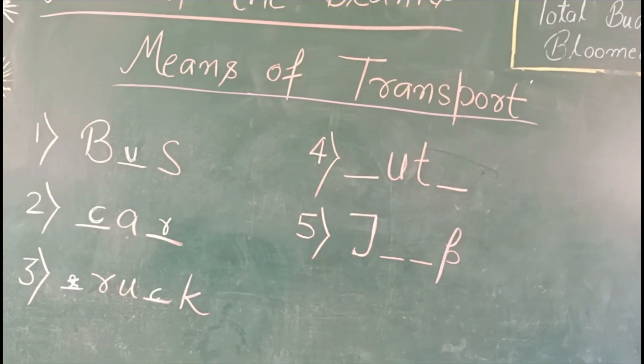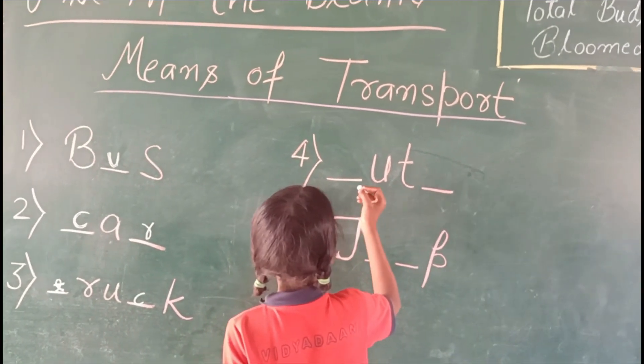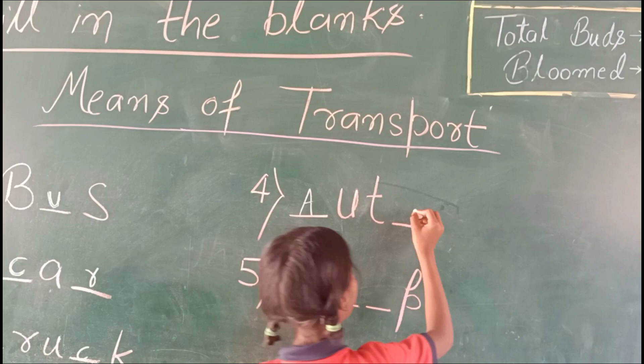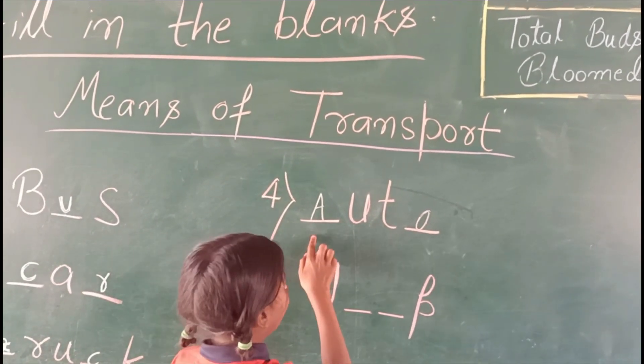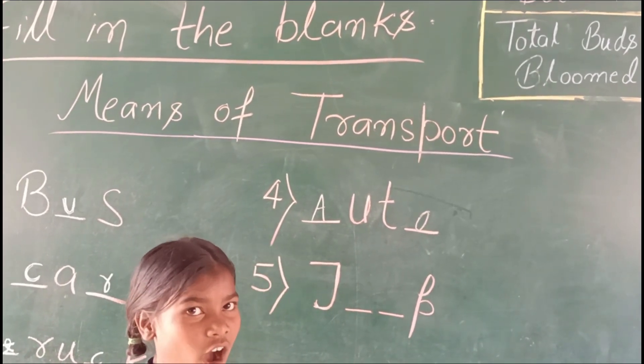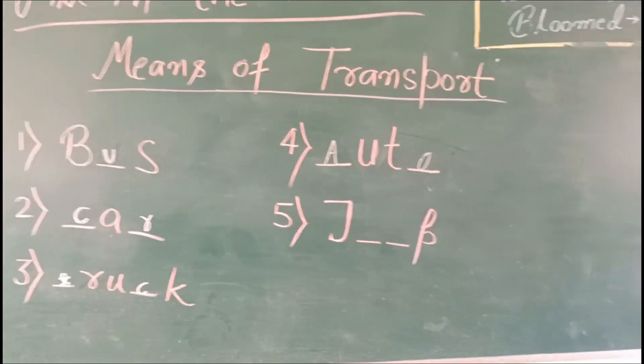Take a piece of chalk. Fill in question number four. Read it. A-U-T-O. Auto. Very good, clap for you. Next.